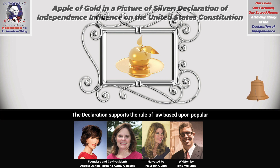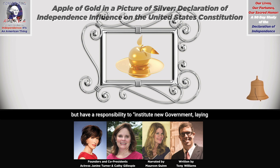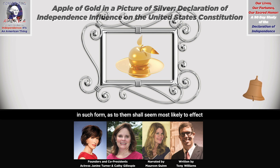The Declaration supports the rule of law based upon popular consent. The people form a government with a rule of law to protect their rights. They have the power to overthrow a tyrannical government, but have a responsibility to institute new government, laying its foundation on such principles and organizing its powers in such form as to them shall seem most likely to affect their safety and happiness.